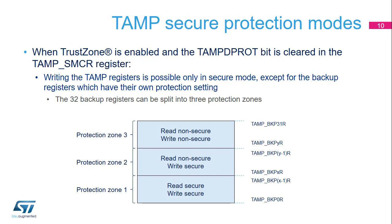By default, after a backup domain power-on reset, all TAMP registers can be read or written in both secure and non-secure modes, except for the TAMP secure mode control register named TAMP-SMCR, which can be written to secure mode only when TrustZone is enabled. The TAMP protection configuration is not affected by a system reset. When the TAMP-DPROT bit is cleared in the TAMP-SMCR register, writing the TAMP registers is possible only in secure mode, except for the backup registers which have their own protection setting. The 32 backup registers, representing 128 bytes, can be split into three protection zones.